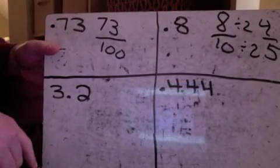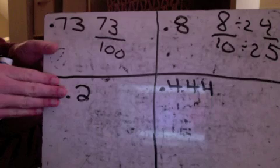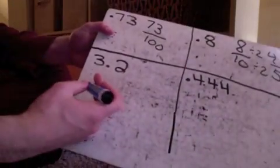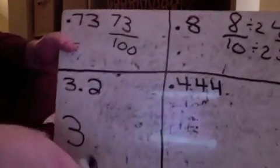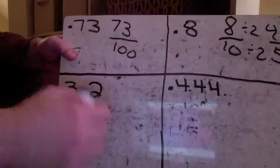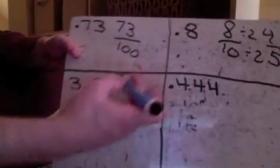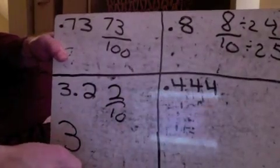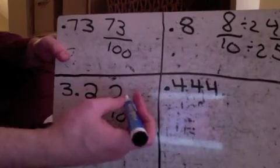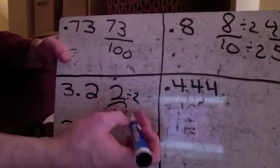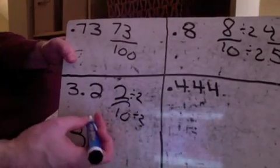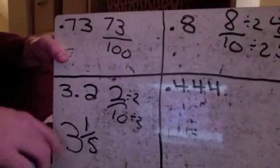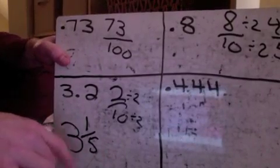The next one is 3.2 — three and two-tenths. I'll set aside the three for now since it becomes the whole number of our mixed number. We just need to figure out the two-tenths part: two-tenths, written as 2/10. Dividing both by two gives one-fifth, so the answer is three and one-fifth.